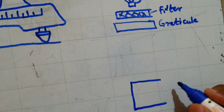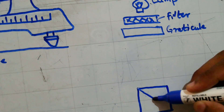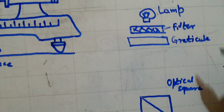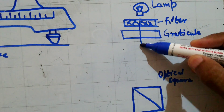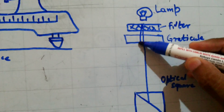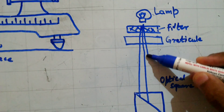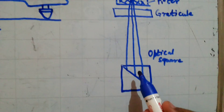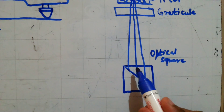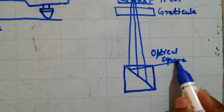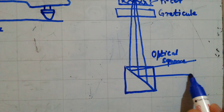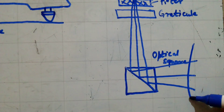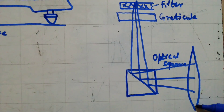Here you will have an optical square. The beam of light gets split and comes to this optical square. Because of this optical square, the beam of light changes direction — the direction changes by 90 degrees.